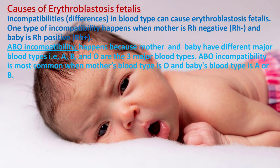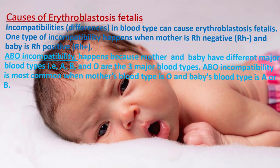Causes of erythroblastosis fetalis: Incompatibilities in blood type can cause erythroblastosis fetalis. One type of incompatibility happens when the mother is RH negative and the baby is RH positive. ABO incompatibility happens because the mother and baby have different major blood types — A, B, and O. ABO incompatibility is most common when the mother's blood type is O and the baby's blood type is A or B.